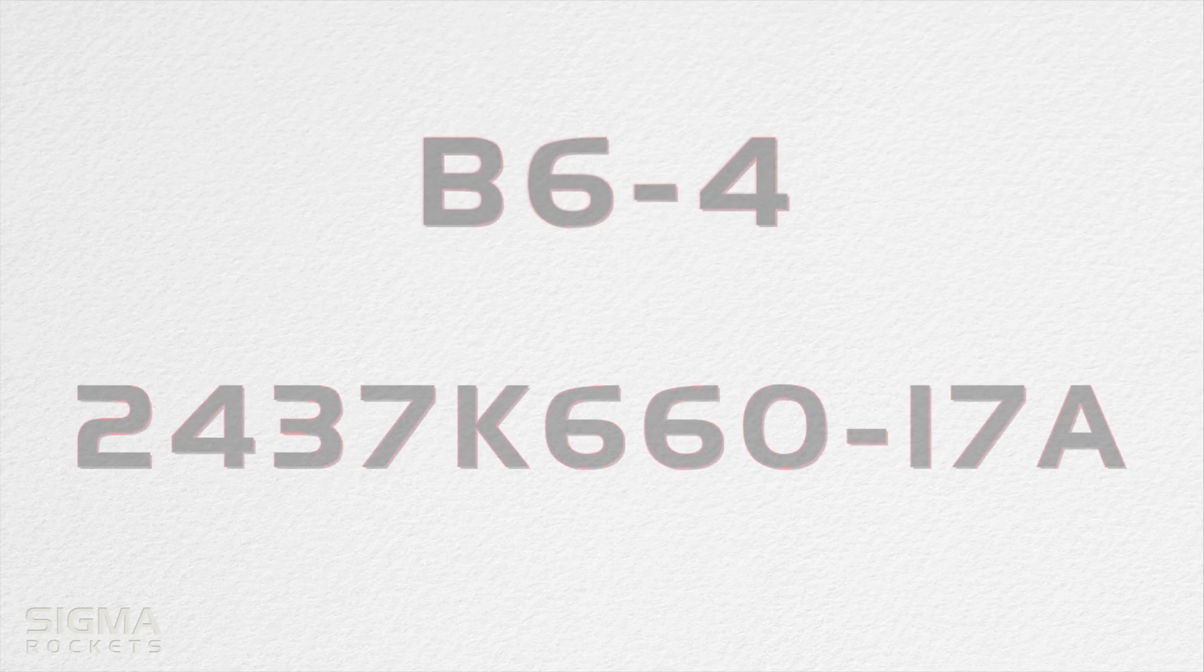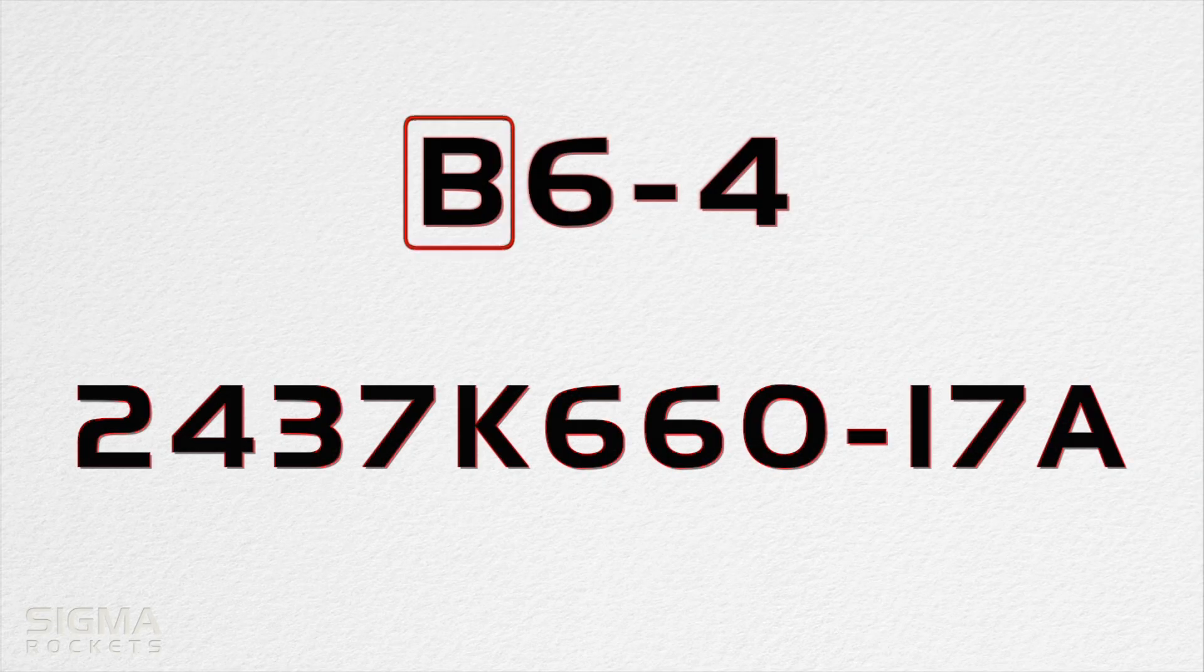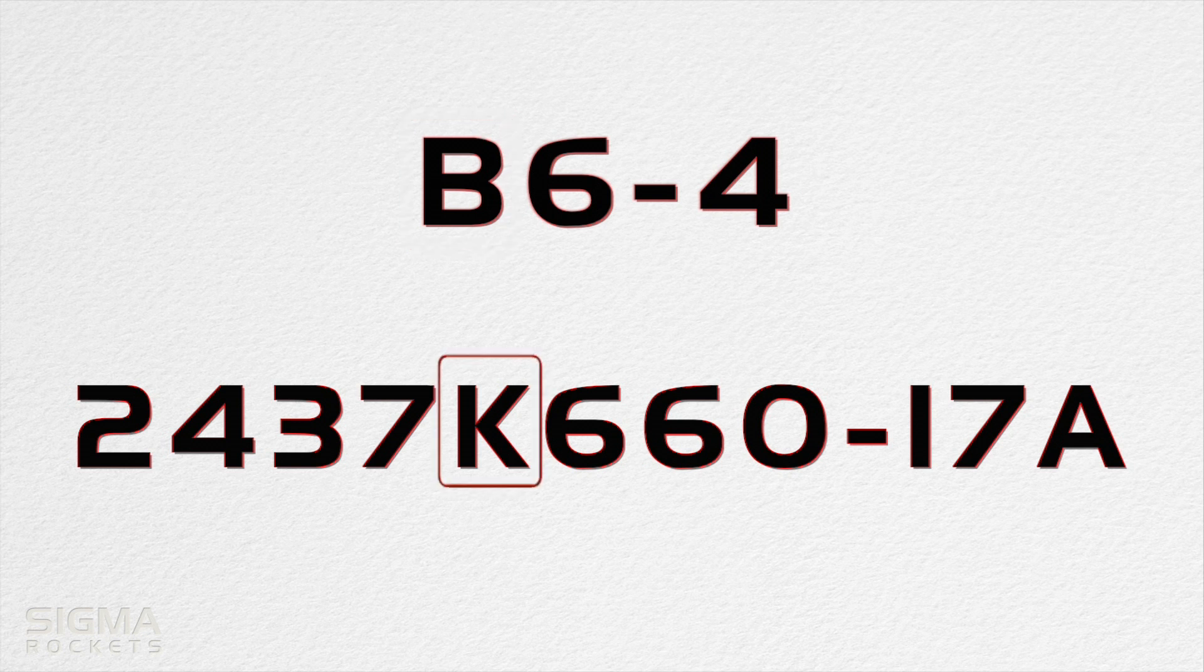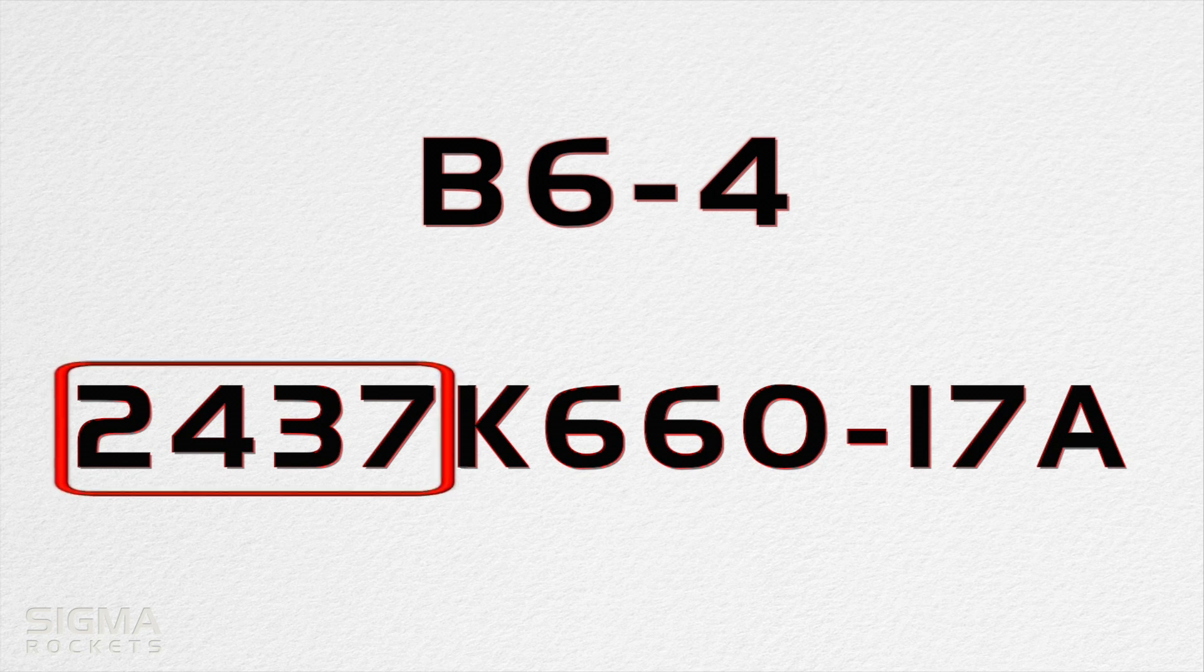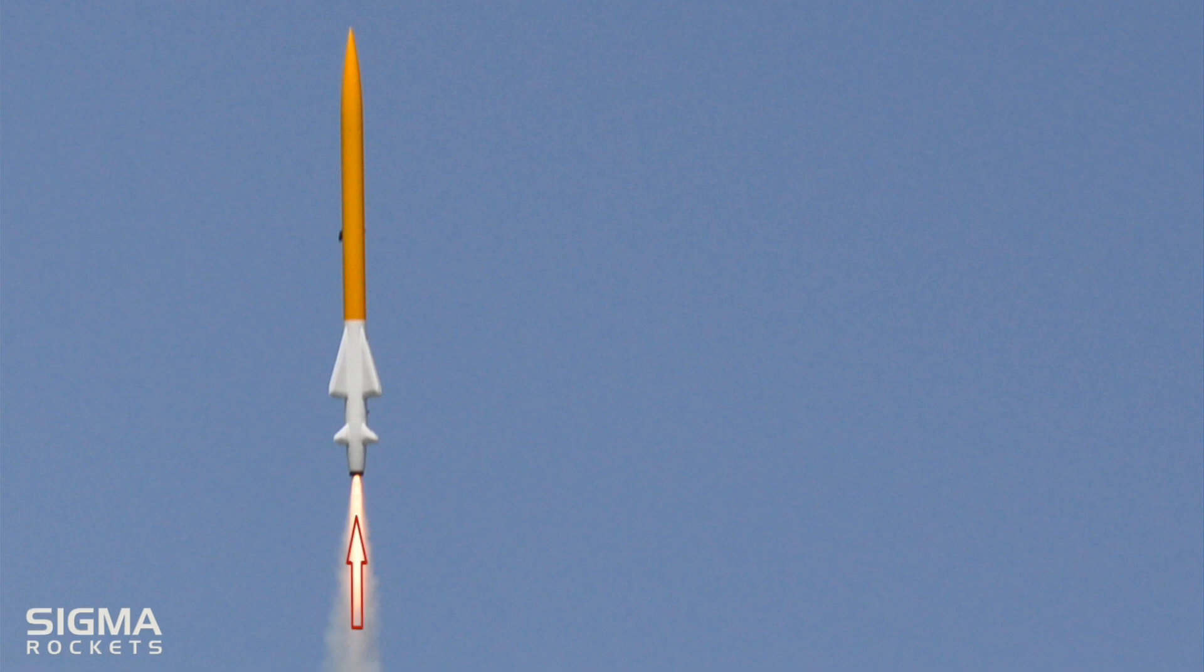The letter in the classification code represents the total impulse of the rocket motor. In the case of some high-powered motors, the total impulse is indicated along with the letter. Total impulse is the total power of a rocket motor. It is the product of the average thrust and the burn time and is measured in newtons.